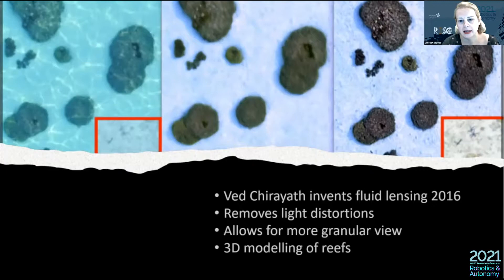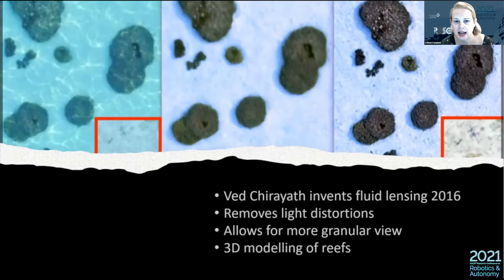Here is an example of fluid lensing. While the difference between image one and image three doesn't seem dramatic, the first image has light distortion throughout. By the third image, which has been lensed and 3D mapped, we can clearly see small sea stars. This gives us an example of seeing corals more clearly and how we can monitor what lives on the reef.